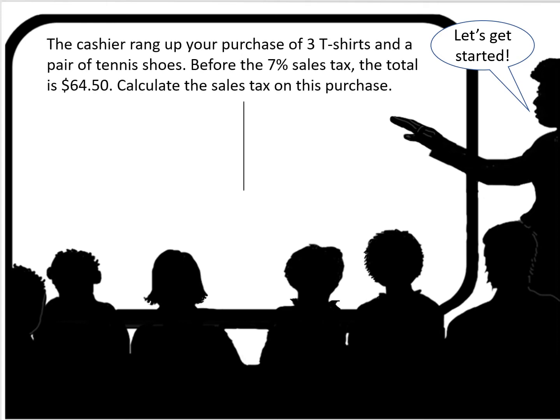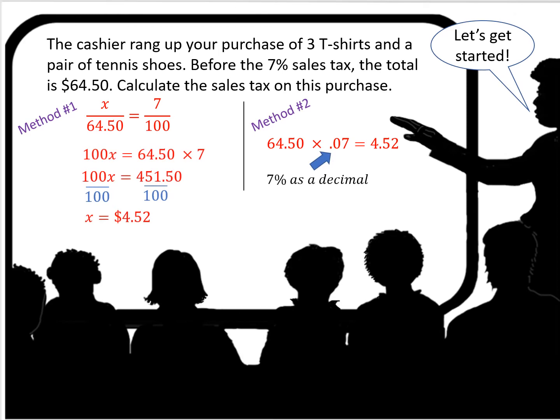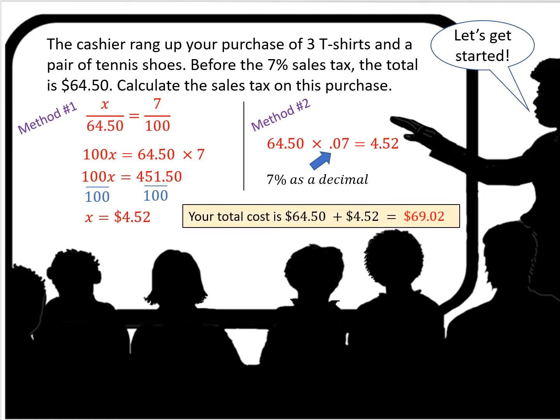The cashier rang up your purchase of three t-shirts and a pair of tennis shoes. Before the 7% sales tax, the total is $64.50. Calculate the sales tax on this purchase. There are two methods. Method one: you can set up a ratio. In method two, you can simply change 7% to a decimal, which is 0.07, and multiply times the original purchase price.